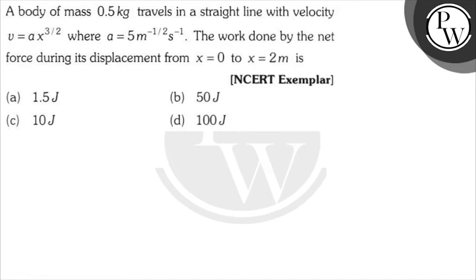Hello, let's see the question. A body of mass 0.5 kg travels in a straight line with velocity V = Ax^(3/2), where A is given.